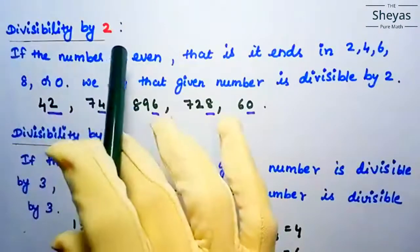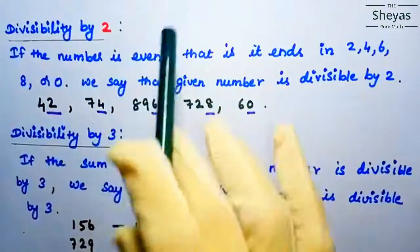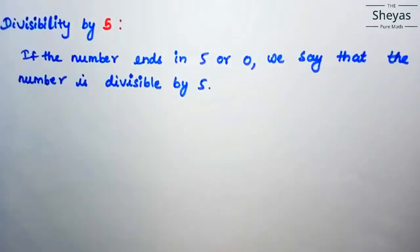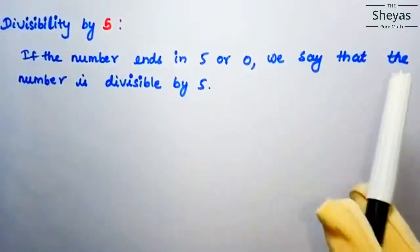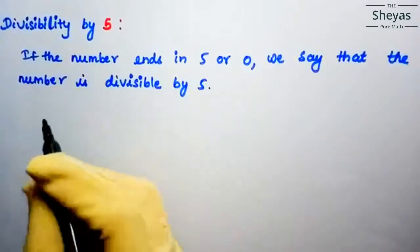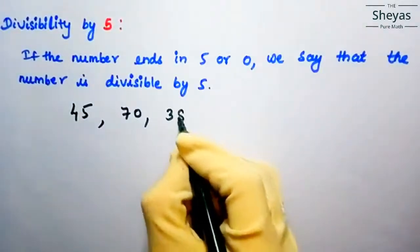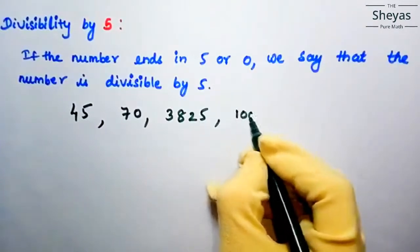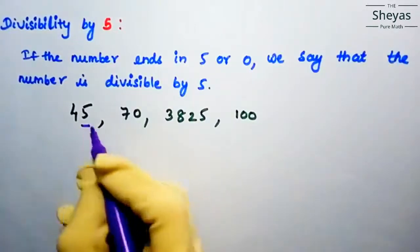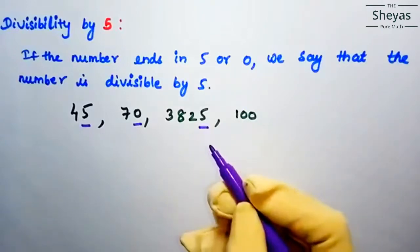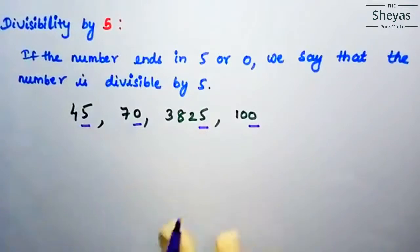So we have seen divisibility by 2 and divisibility by 3 — both 2 and 3 are prime numbers. Now let us discuss divisibility by 5. If the number ends in 5 or 0, we say that the number is divisible by 5. For example, 45 ends in 5, 70 ends in 0, 325 ends in 5, and 100 ends in 0 — so all these are divisible by 5.